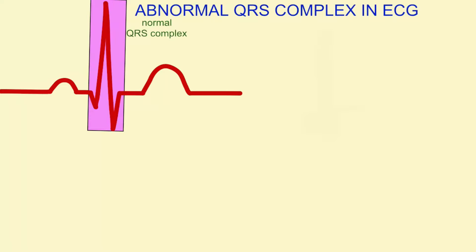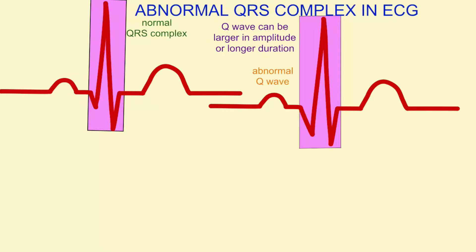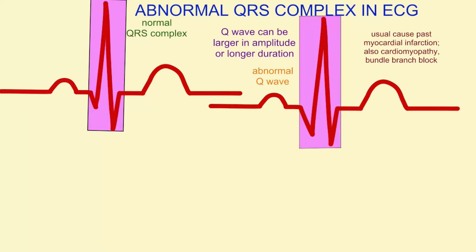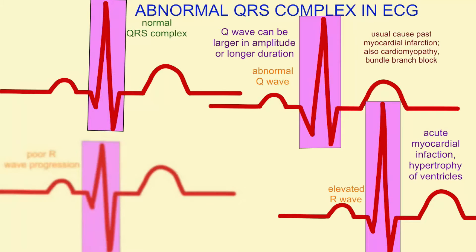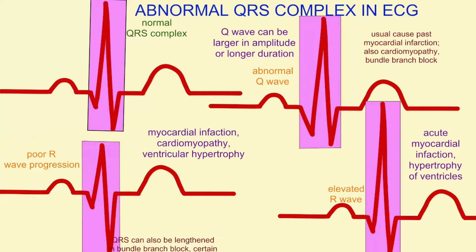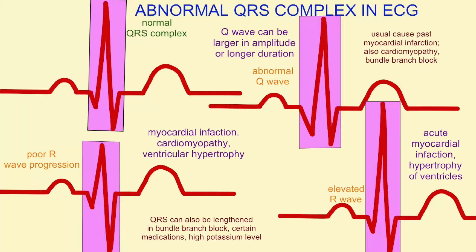The QRS complex usually goes down for a small Q portion, up for a larger R, and then down for the S. However, there are some variations. The Q wave can be larger than normal or wider than normal. The R wave can be elevated, or it can show poor progression and be depressed. This is often the result of a myocardial infarction, either present or past, but can also be caused by other things such as the hypertrophy of the ventricles, certain medications, calcium levels, and other causes.